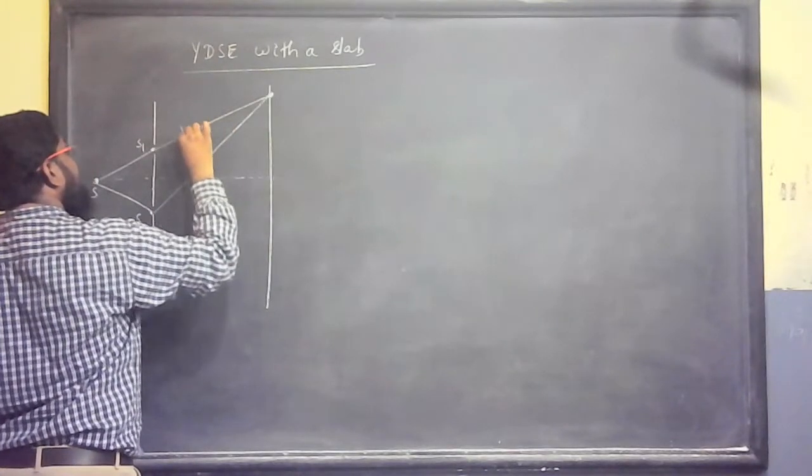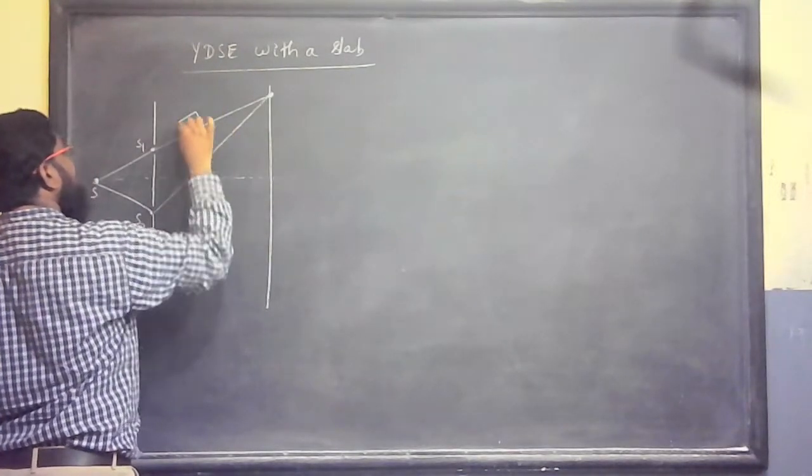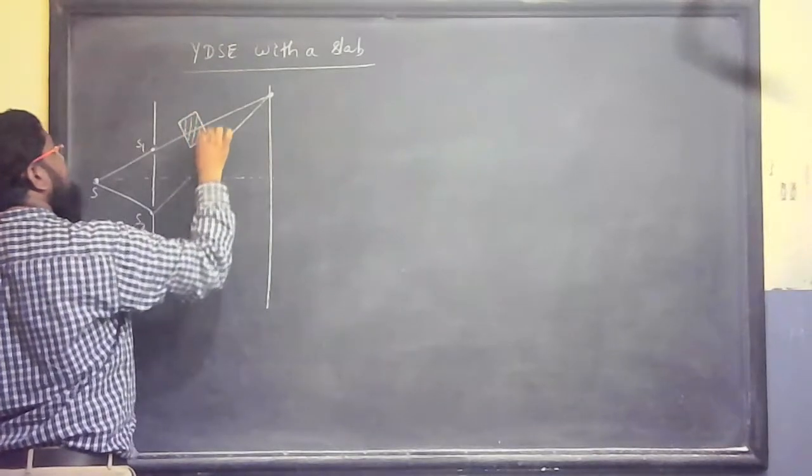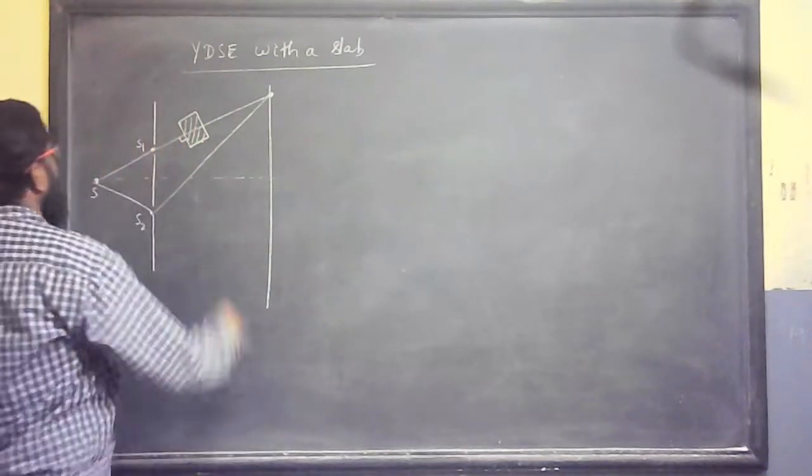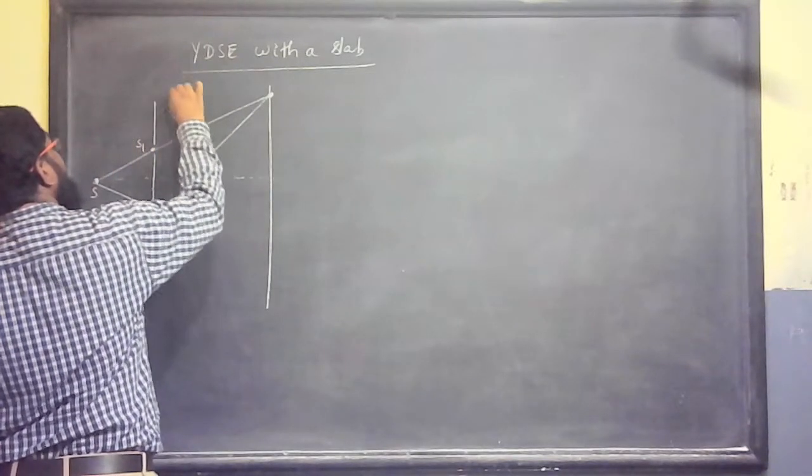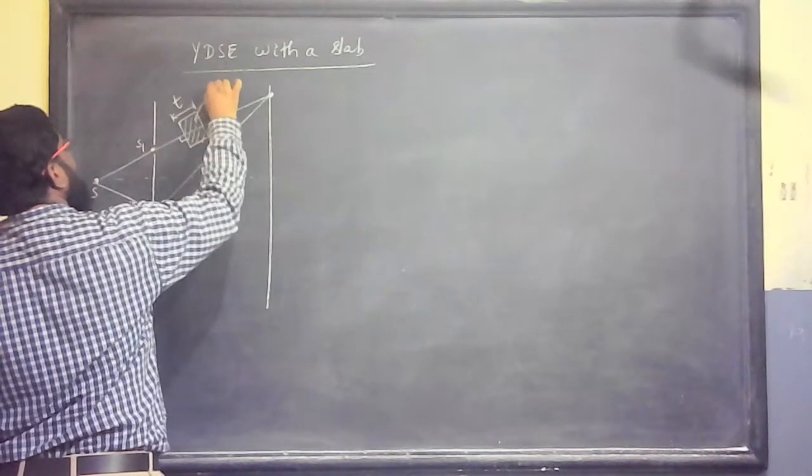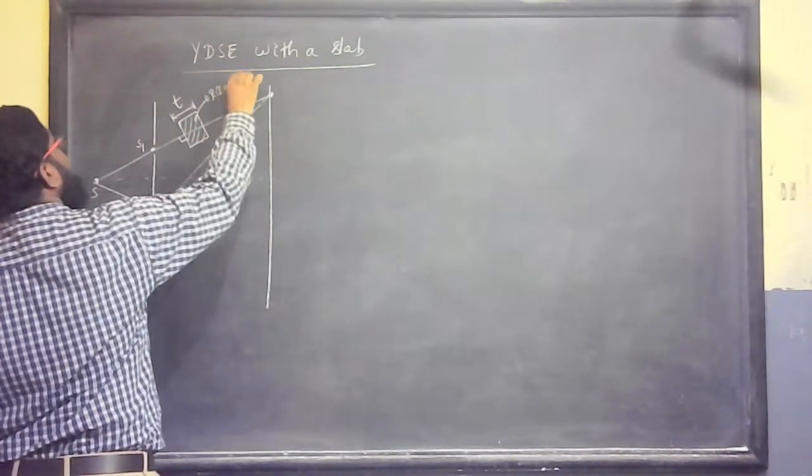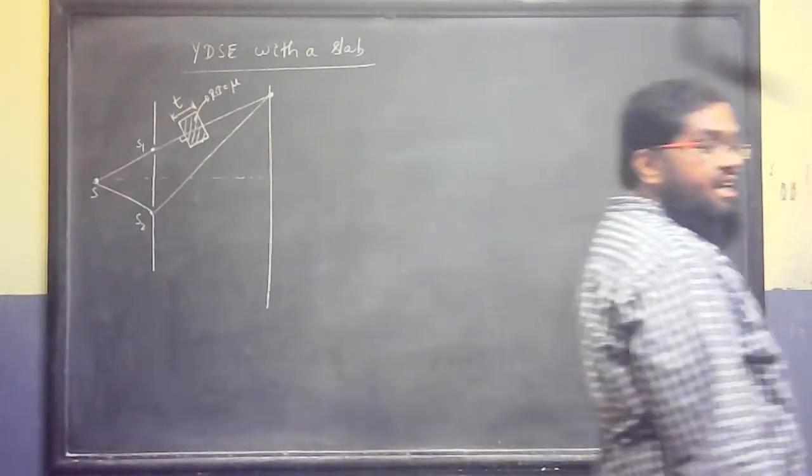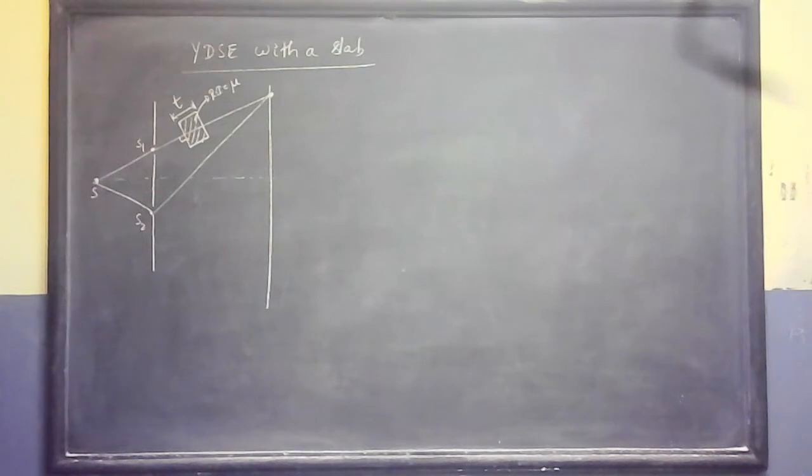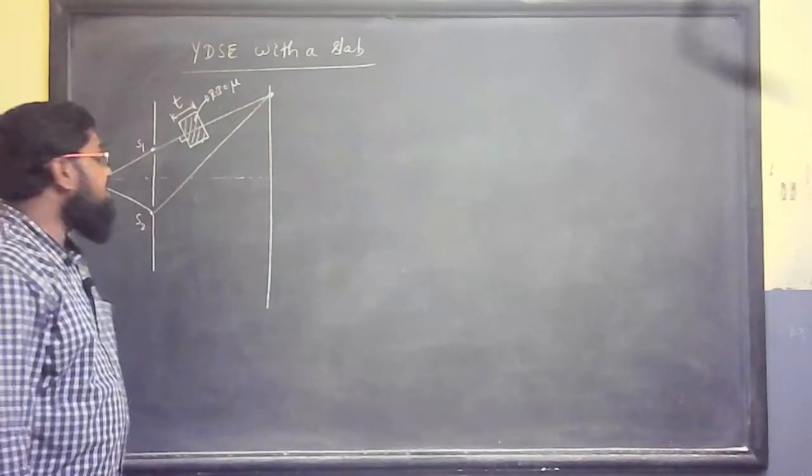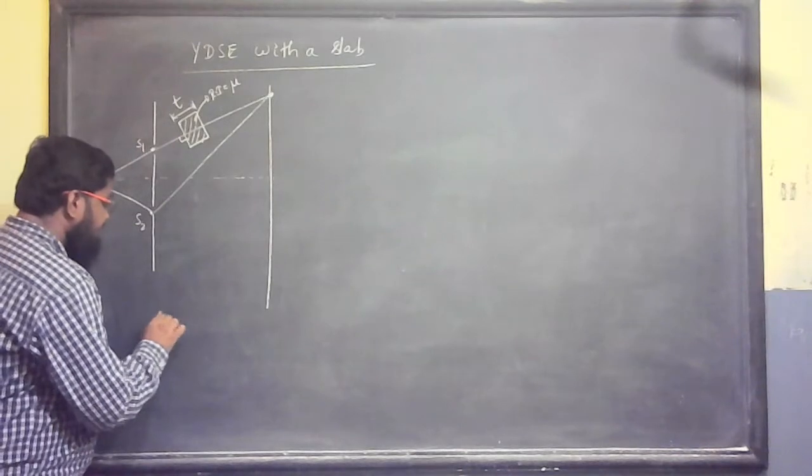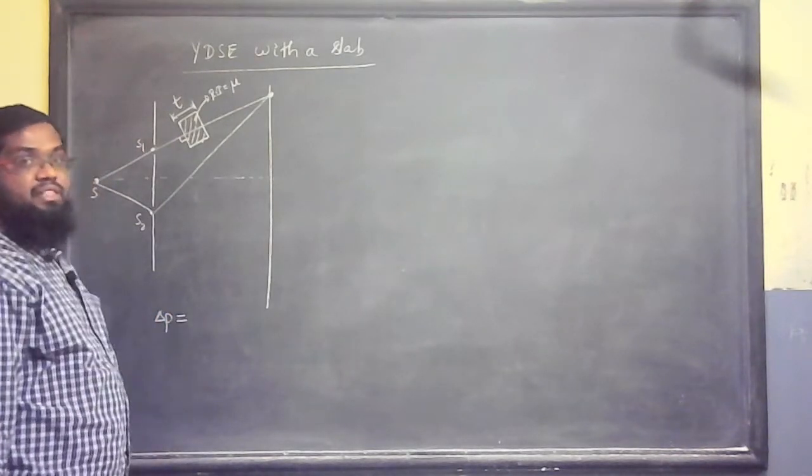Now, what I am doing, here I am placing one glass slab here. It is a normal incidence, it falls normally. Let us take the thickness will be T and it made with a material of refractive index mu. Now, study the interference pattern on the screen. As usual, first we need to write the path difference, that is geometrical path difference, the optical path difference, delta P.